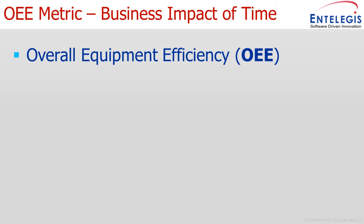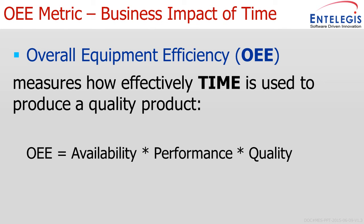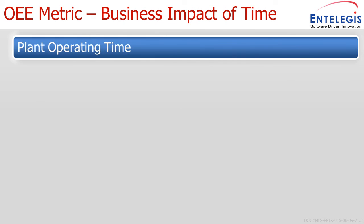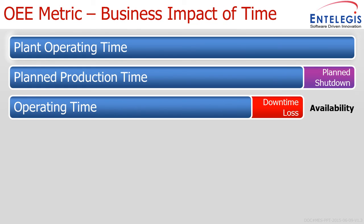The metric used by MES in manufacturing is OEE — Overall Equipment Effectiveness — and essentially it measures how effectively time is used to produce a quality product. It encompasses all facets of time: availability, performance, and quality, which multiplied together give us our OEE value. If we take the operating time — the time the lights are actually on in the building, not including any shutdown activities like a summer shutdown — only a subset of that will be planned production time, because we will have some planned shutdowns for lunches, breaks, and so on.